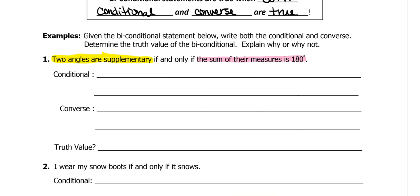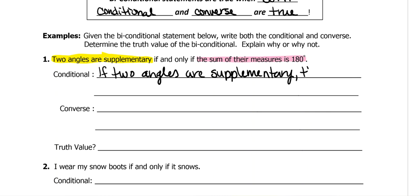To write the conditional, you start off with 'if,' like always. Then you write all of the yellow: 'Two angles are supplementary.' Then it will have 'then' right after that, and you write everything in the pink: 'Then the sum of their measures is 180 degrees.'